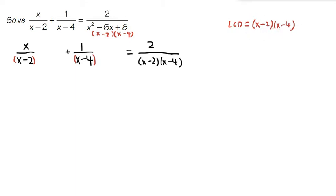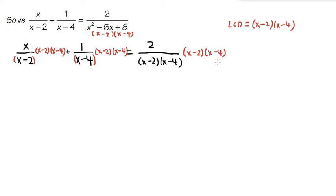We'll know if we are doing this right because after we multiply out the lowest common denominator, there shouldn't be any more fractions. So I'll put down x minus 2 times x minus 4 in the space we left earlier for the first fraction. Likewise, I'll put it in the space we had for the second fraction: x minus 2 times x minus 4. And also x minus 2 times x minus 4 on the right side. For the first term, the x minus 2 here cancels with this x minus 2.